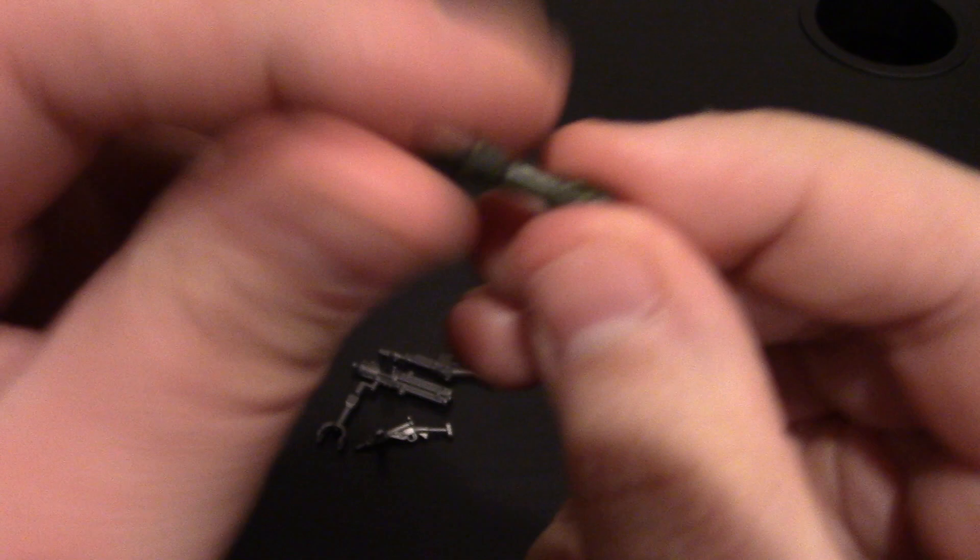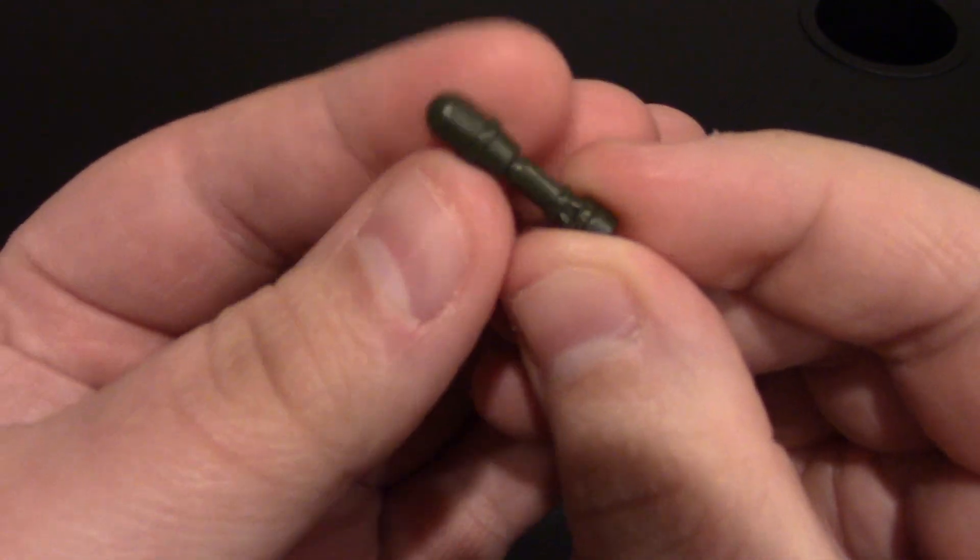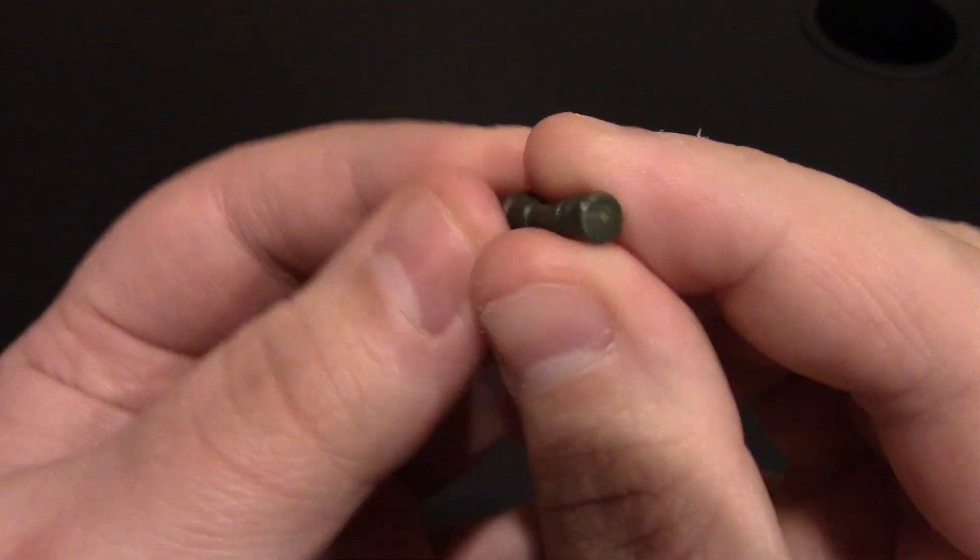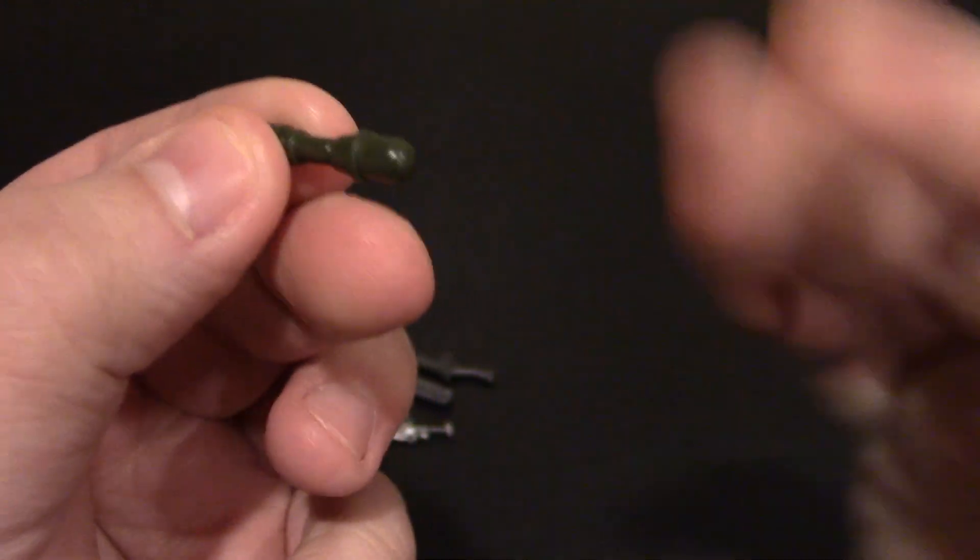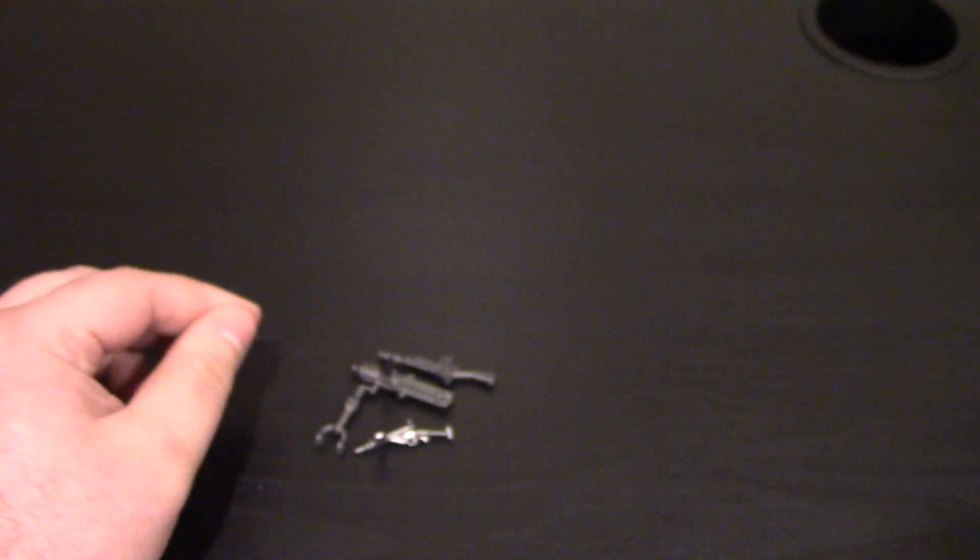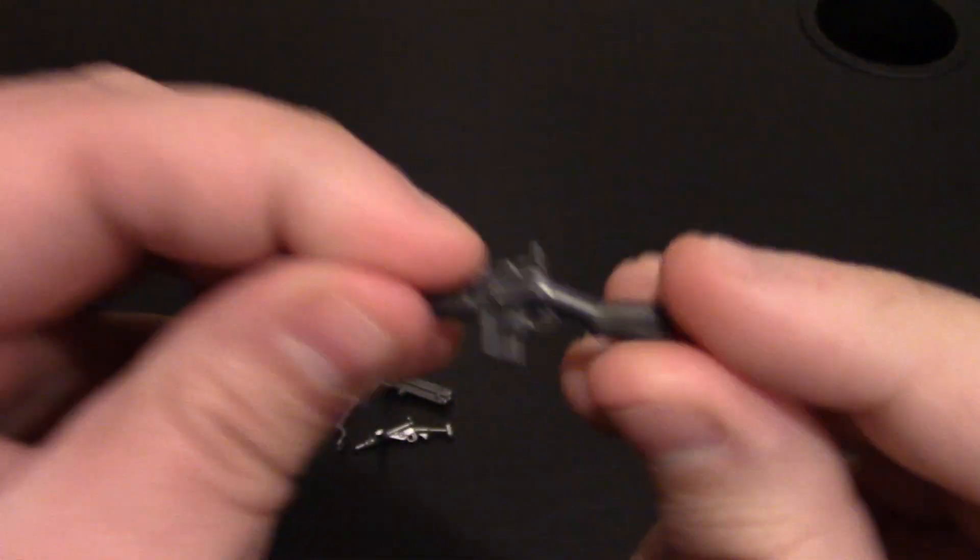We have a panzer rocket launcher in tan. We have a mortar shell in dark green. They do make a mortar that this is able to fit into. So if you're making a mock or a stop motion and you want to have that realistic mortar launch, you can do that.